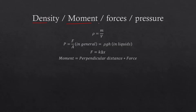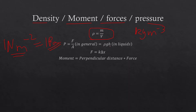Density is mass by volume, measured in kg/m³. Pressure is force by area, measured in N/m², and 1 N/m² equals 1 pascal. In liquids, pressure equals ρgh — density times gravity times height, where gravity is the field strength 9.81 N/kg. Force equals kΔx, which is Hooke's law: k is the spring constant, Δx is the displacement of the spring. The moment of a force is equal to perpendicular distance times force applied, measured in newton metres.